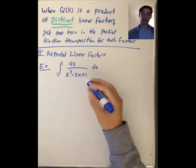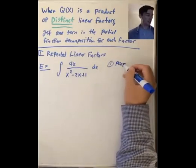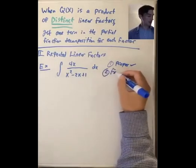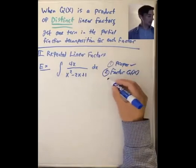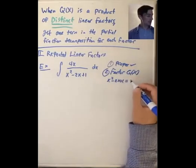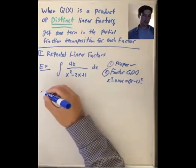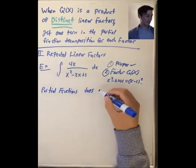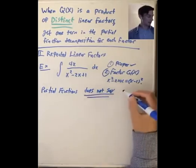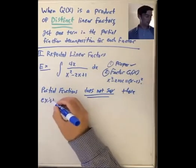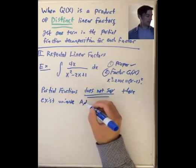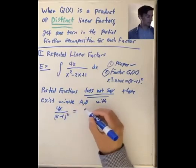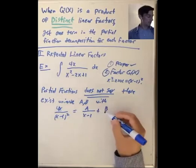Let's do an example. We'll check that the rational function is proper: the numerator has degree 1 and the denominator has degree 2. Then we factor the denominator and see that x squared minus 2x plus 1 equals x minus 1 squared. The method of partial fractions does NOT say — and let me really emphasize this — does not say that there exist unique a, b with 4x over x minus 1 squared equals a over x minus 1 plus b over x minus 1, because the denominators on the right-hand side are the same.